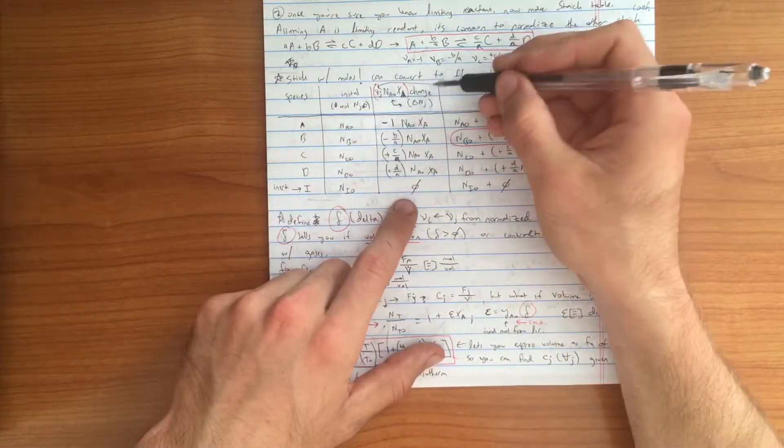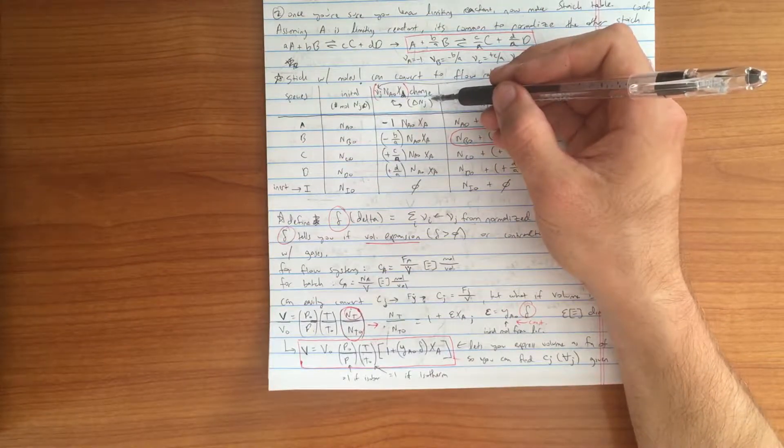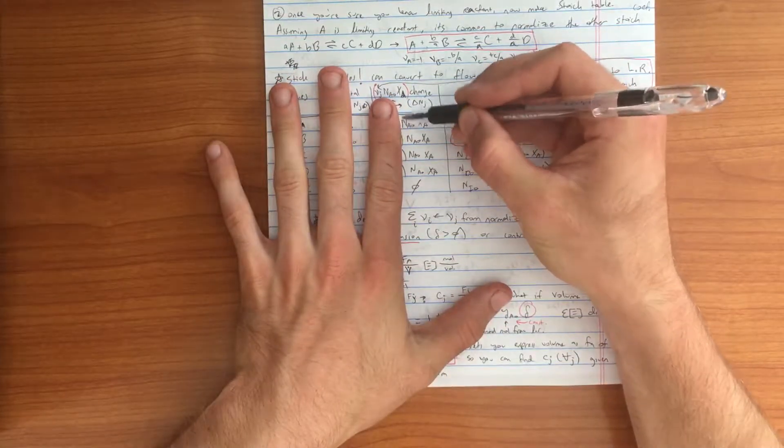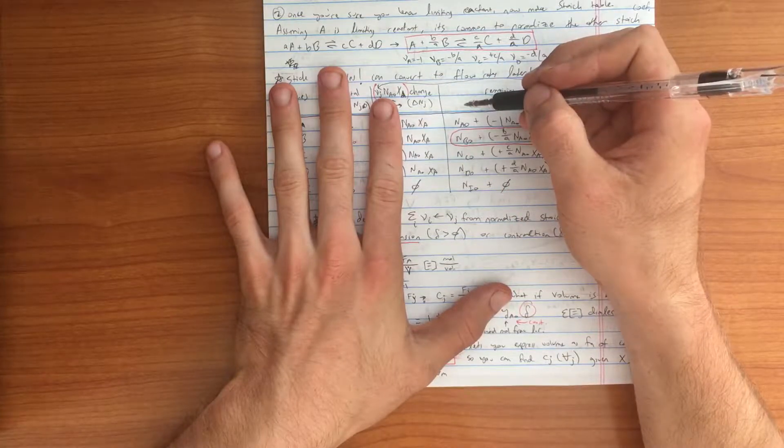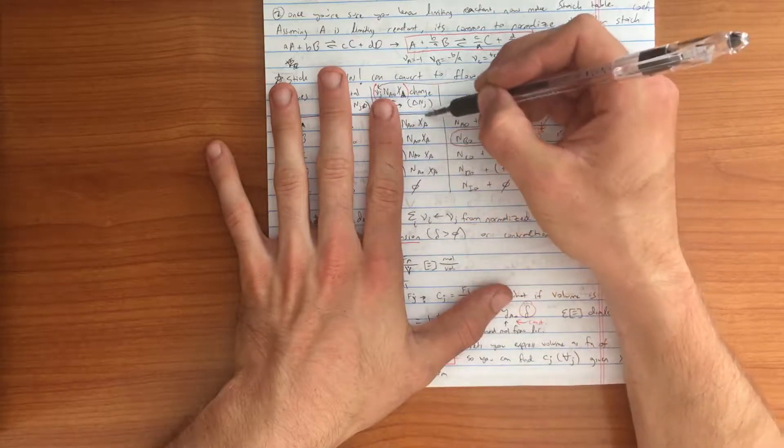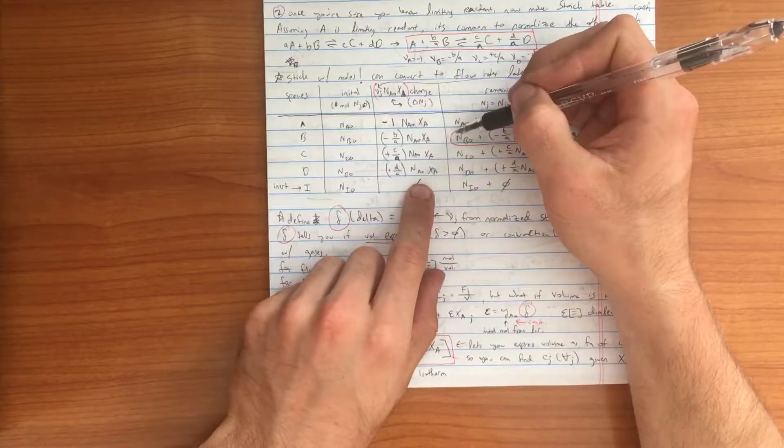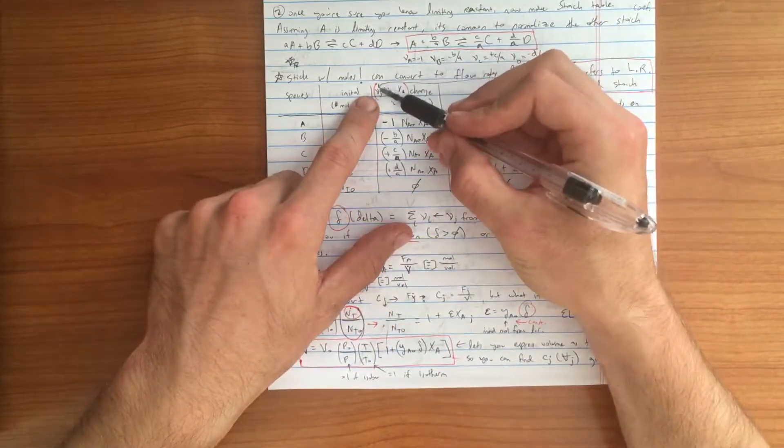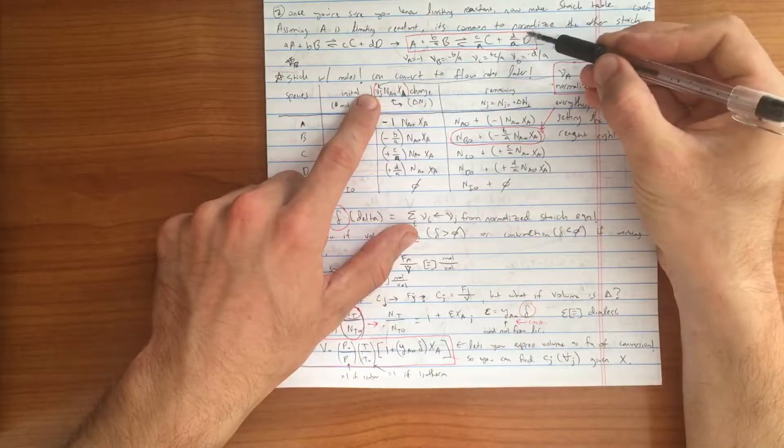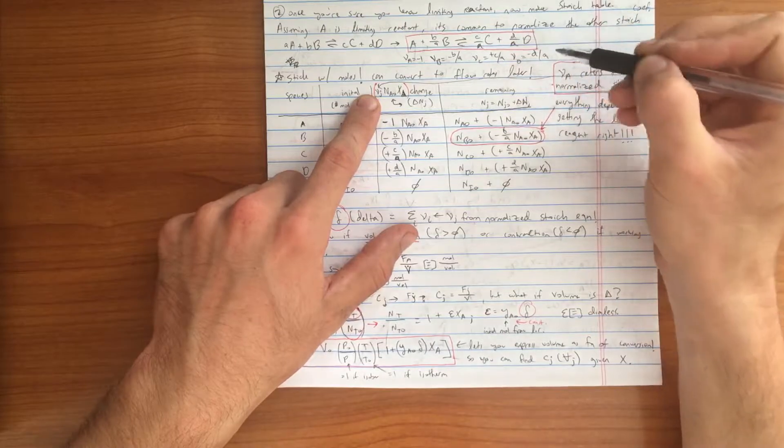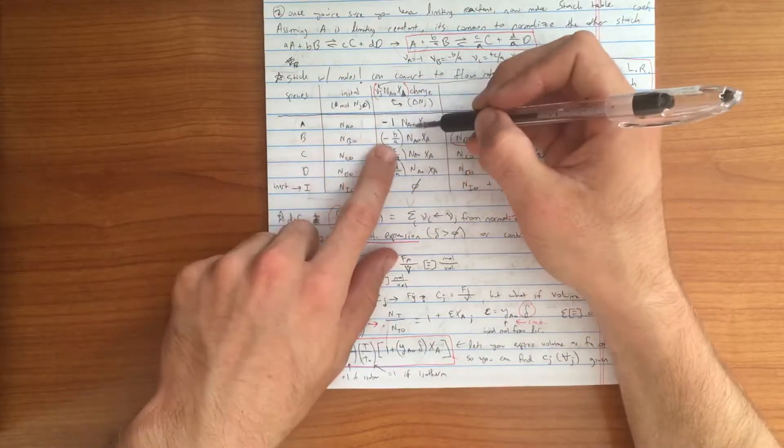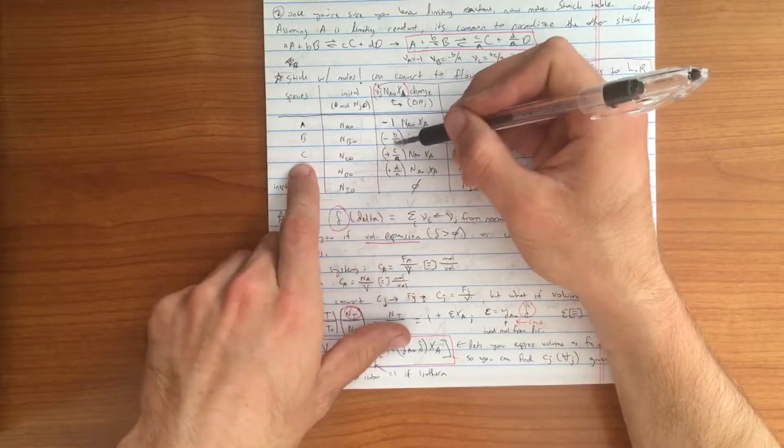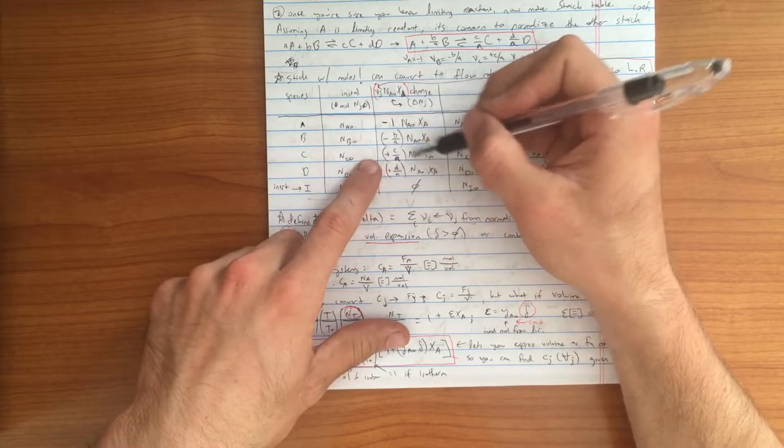In the third column, we have the change in the number of species of mole J, species J, and that will be equal to, notice the common theme here, N sub A naught times X sub A. This is why it is so important to make sure you have fully understood what your limiting reagent is before proceeding to actually making your stoichiometric table. All this term is, is it's N sub J, where N sub J originates from our normalized stoichiometric equation and it has the appropriate sign. Because we are losing moles of A and B as our reaction proceeds, we have negative signs, and we are gaining moles of C and D as the reaction proceeds, so they have positive signs.